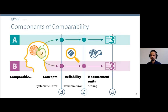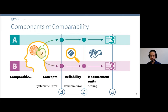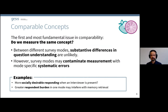To pragmatically solve these issues, I propose we divide and conquer — split the problem into components of comparability. It's a framework I use when establishing comparability across different instruments, but it fits well for comparability between survey modes. I focus on comparability of a specific measured concept with a specific instrument. The three components are: first, are we measuring the same concept — comparable concepts; second, do we measure comparably reliably — comparable reliability; and third, are the measurement units comparable across modes.